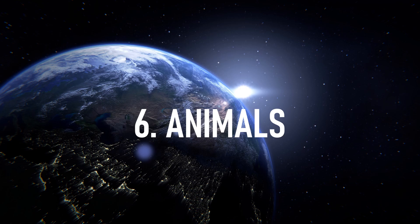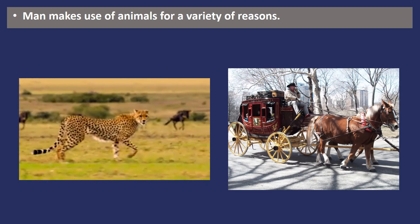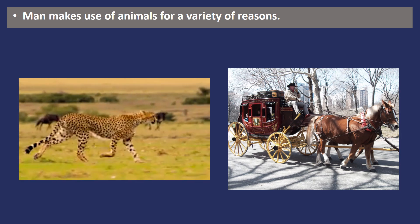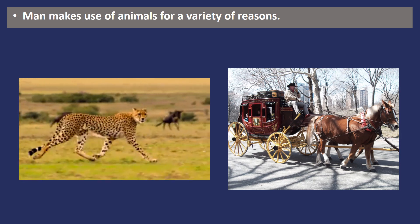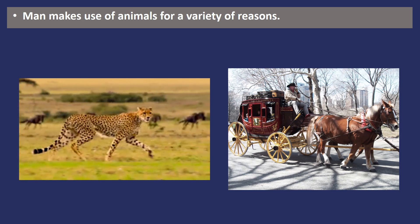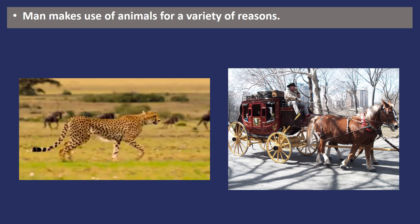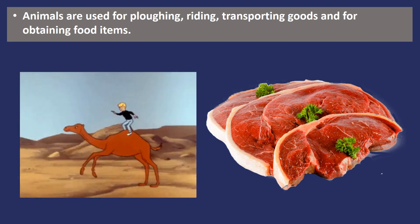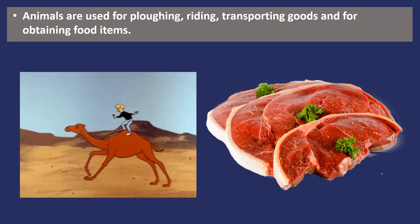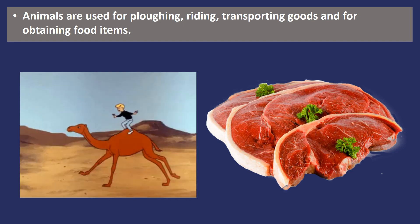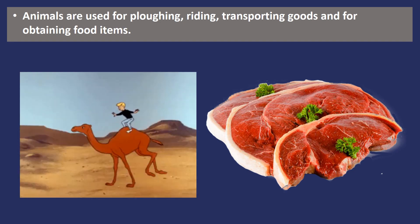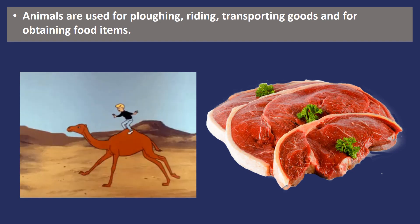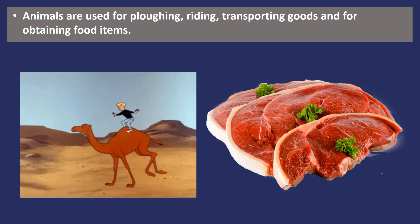Man, animals and plants together constitute the biosphere. The use of animals by humans for different purposes has been happening since ancient times. Today, we see animals being part of the entertainment industry and also of different medical campaigns. Animals are used for satisfying different human needs like ploughing, riding, clothes and transport. But most importantly, they satisfy our need for food — they provide us with milk and meat. The white revolution in India could only be possible because of animals.